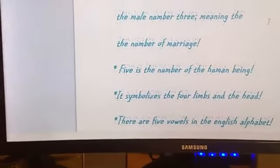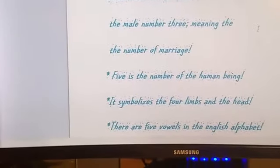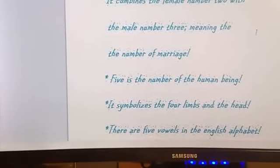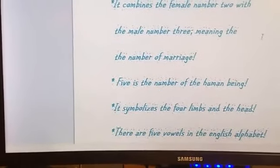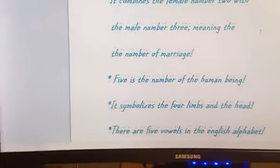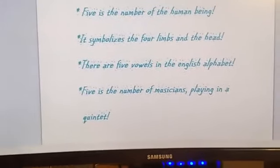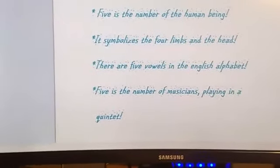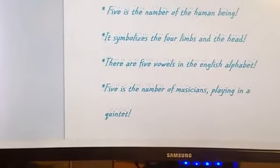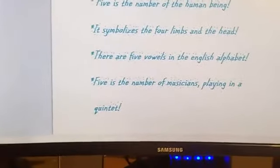There you have it. 5 is the number of the human being. It symbolizes the 4 limbs and the head. There are 5 vowels in the English alphabet. 5 is the number of musicians playing in a quintet.